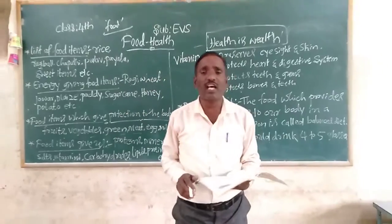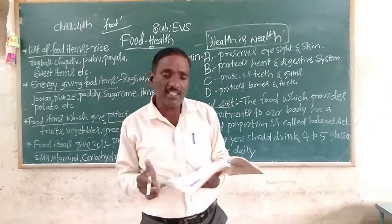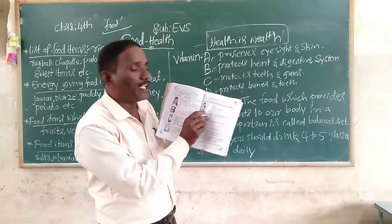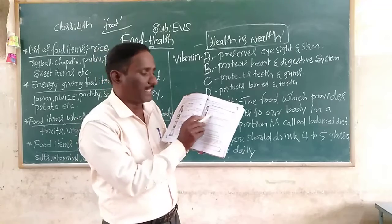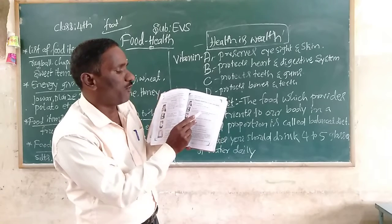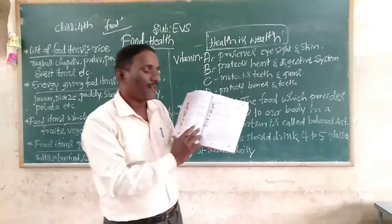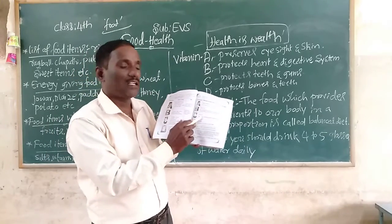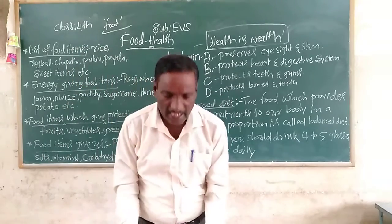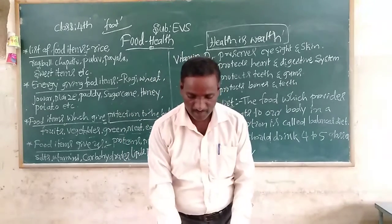Diseases caused by deficiency of vitamins: Vitamin A deficiency causes night blindness — one cannot see in dim light. Vitamin B deficiency causes beriberi — for example, accumulation of water in legs, muscle pain, and respiration problems. Vitamin C deficiency causes scurvy — soft and bleeding gums, and sore legs. Vitamin D deficiency causes rickets — disorder of bones, and bone deformity.